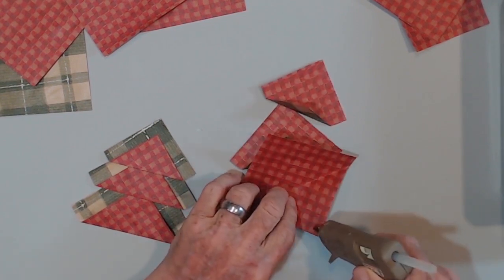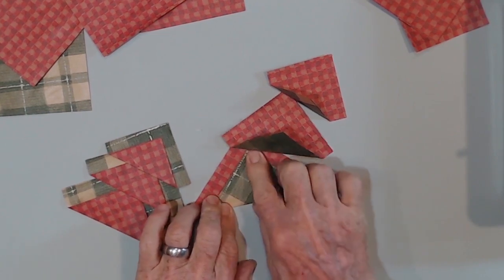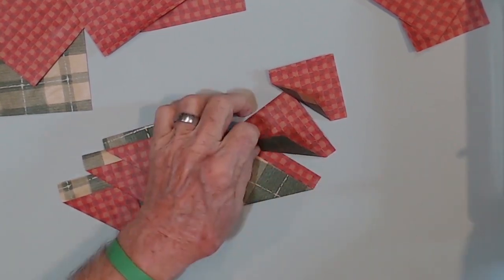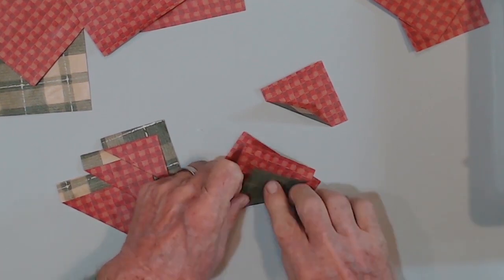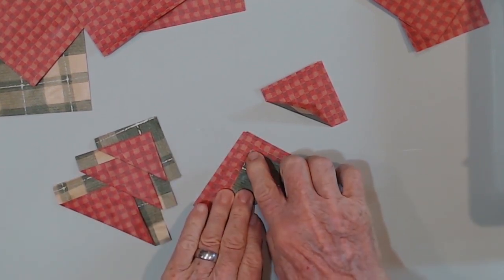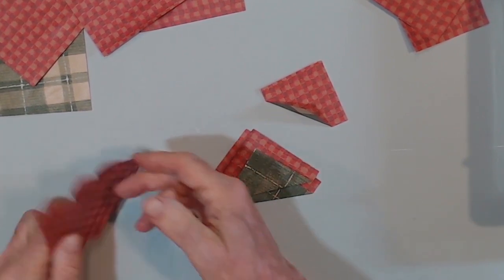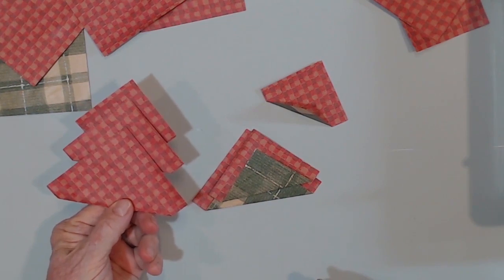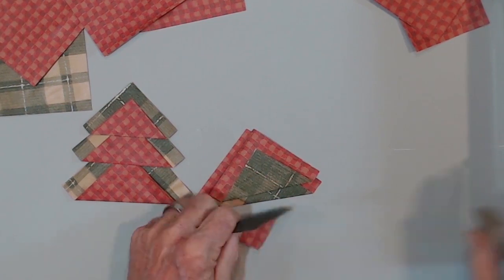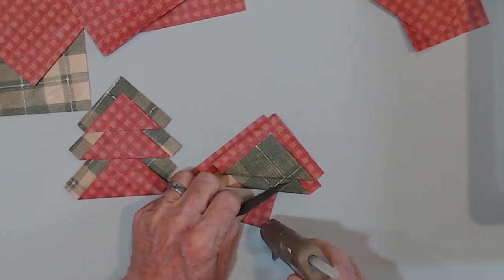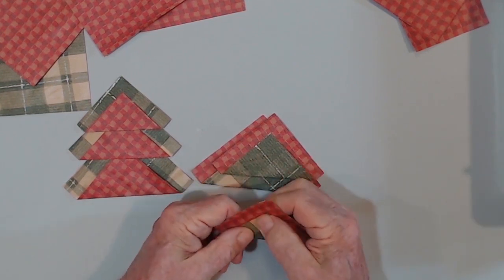And then the other one is the reverse colors. So, I'm gluing the top down. Glue a little dot here. And these are more like just embellishments on things. But you can hang them from a tree.